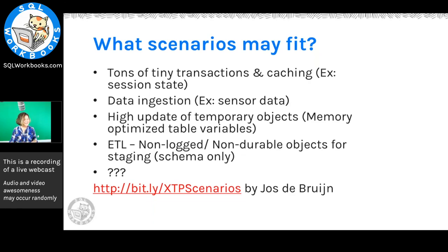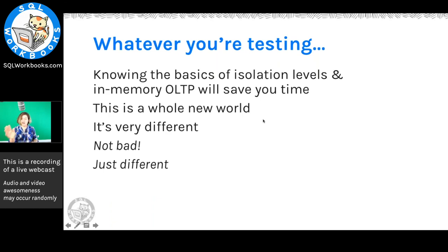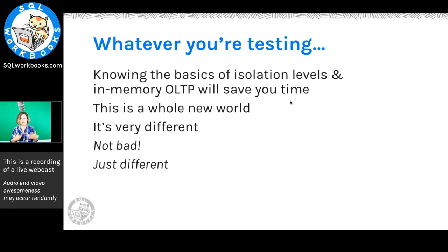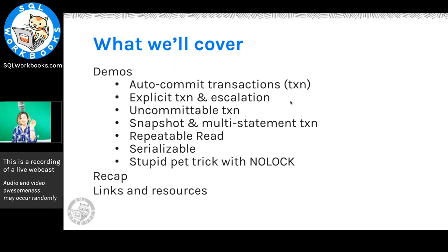Today's focus is all about isolation levels. Whatever you're testing, the isolation levels can be confusing because this is really different from disk-based row store tables and disk-based column store in SQL Server. But once you start playing with it, it isn't even hard — there are only three isolation levels, actually fewer than disk-based. Once you get used to how they work, it makes sense, but it is really different. Most of what we're doing today is playing around with different demos.